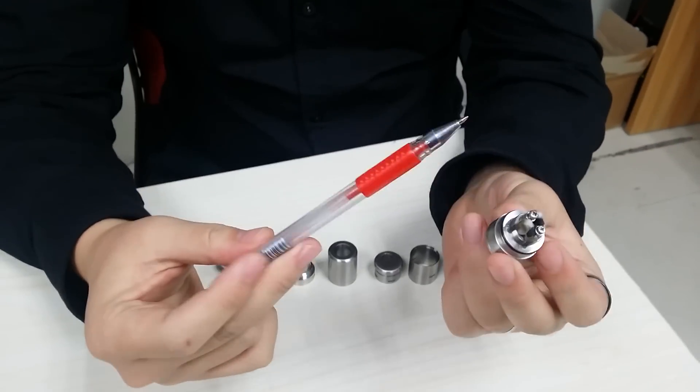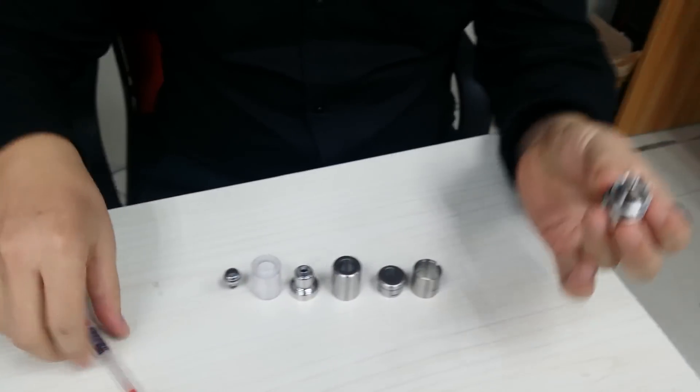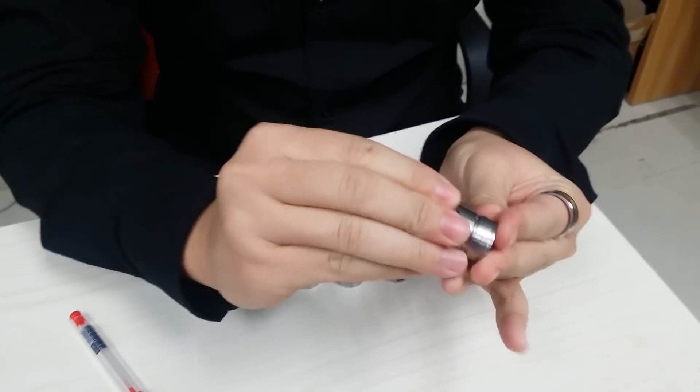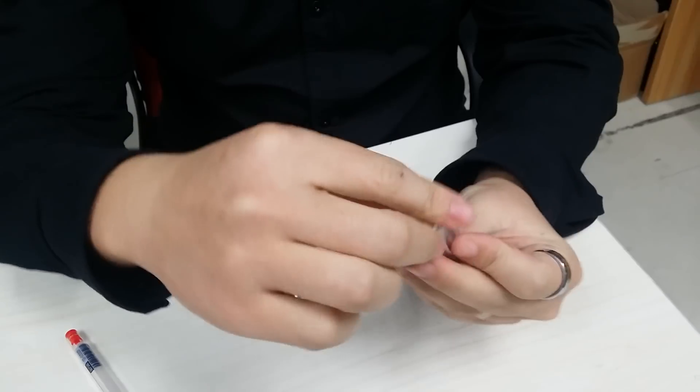This Aokuawei II can make one as a rebuildable dripping atomizer. This one is a stainless steel. Cover it. And this top, put it down.